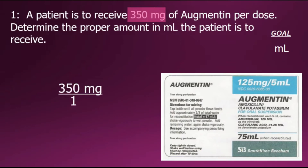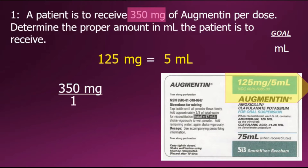To convert from milligrams to milliliters, we consult the drug on hand. Here is a screenshot of that drug — note particularly the upper right-hand corner, which states that the ratio is 125 milligrams per five milliliters. We'll use that relationship to convert from the current order in milligrams into milliliters.